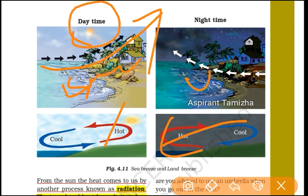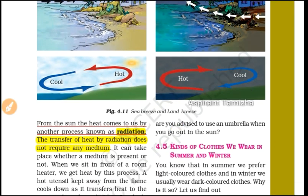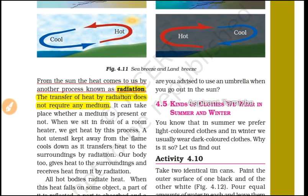Land breeze occurs at nighttime. The sun's heat comes to us by another process known as radiation. The transfer of heat by radiation does not require any medium.